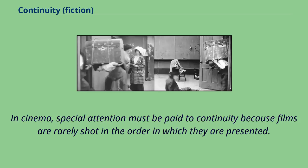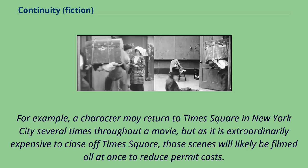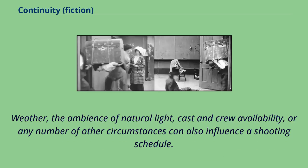In cinema, special attention must be paid to continuity because films are rarely shot in the order in which they are presented. The shooting schedule is often dictated by location permit issues. For example, a character may return to Times Square in New York City several times throughout a movie, but as it is extraordinarily expensive to close off Times Square, those scenes will likely be filmed all at once to reduce permit costs. Whether the ambience of natural light, cast and crew availability, or any number of other circumstances can also influence a shooting schedule.